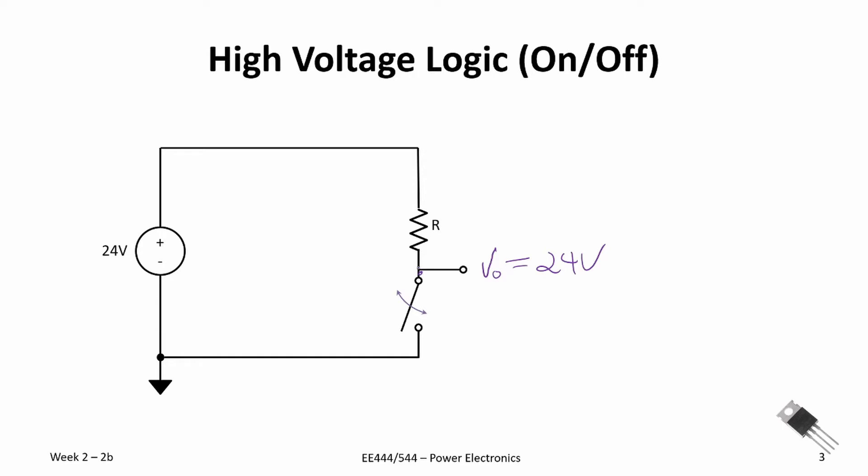When we close the switch, we will short that out and bring it down to zero volts. Our output voltage goes to zero volts. We can use this to create high voltage logic levels, sometimes called a logic shifter.